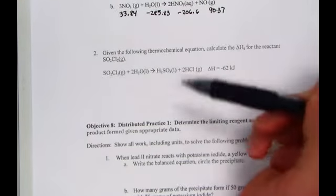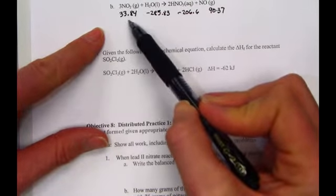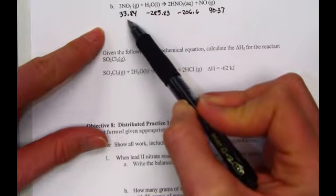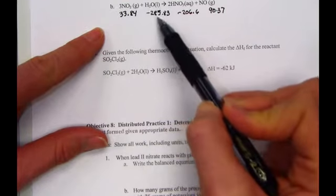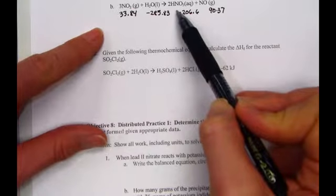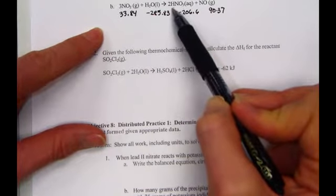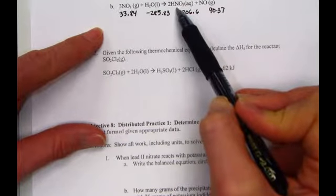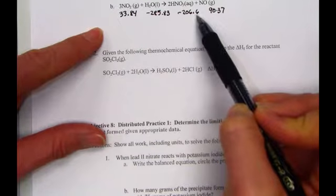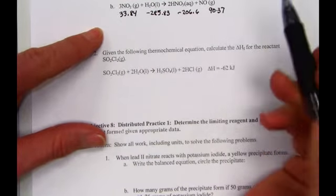The next equation has us using the same formula. Three units of NO2 gas. I've already looked up the value using my appendix C, the thermodynamic value of 33.84. Liquid water I've recorded as negative 285.83. The aqueous nitric acid, HNO3, not found in the H's. I found that in the nitrogen family listed alphabetically by the N, negative 206.6. And then one more time from the previous problem, we're using the NO, 90.37.